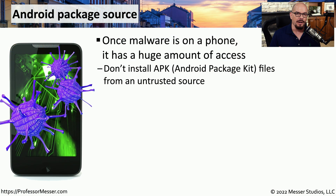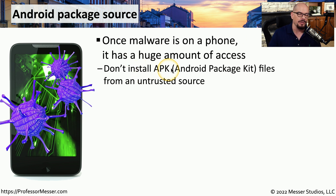The software that we install on our phones, our tablets, and our computers needs to be trusted. That's because the software we install on these devices has a great deal of access to the operating system, our personal files, and other parts of the operating system itself. If you have an Android device, you can install software from any source — you just need the APK file, which stands for the Android Package Kit file, and then you can install that application on your Android device. This is why we always say to never install software on a device unless you already trust the source.